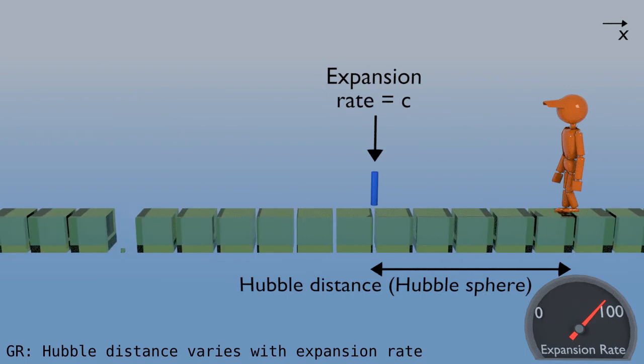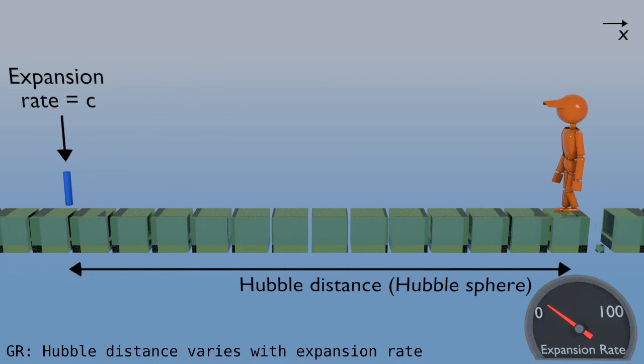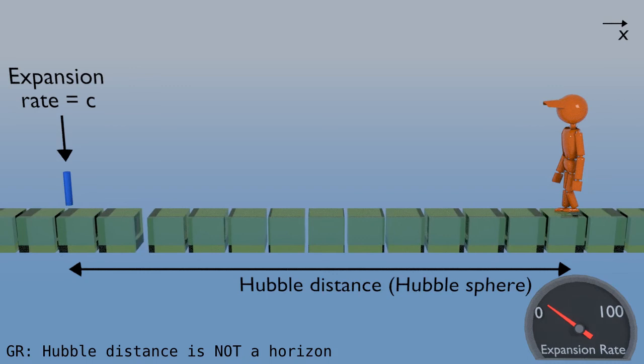If the expansion rate increases, then the point where space recedes at the speed of light will be closer to the observer. In other words, the Hubble distance gets smaller. And if the expansion rate decreases, then the Hubble distance gets larger. Because the Hubble distance can shrink and grow, galaxies can cross it in both directions. Therefore, the Hubble distance is not a horizon, because horizons are one way.